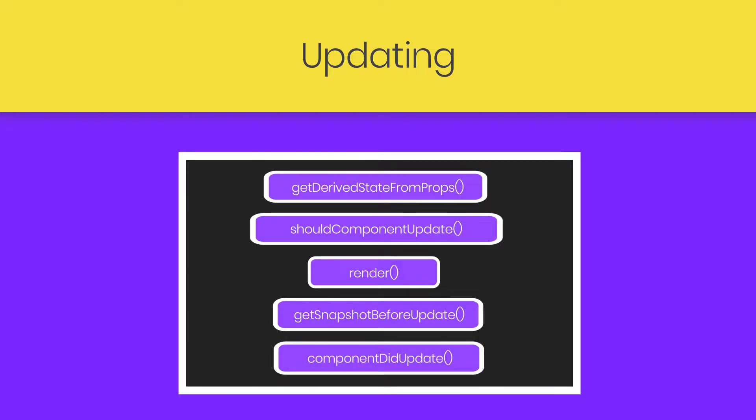This method is very interesting because in the getSnapshotBeforeUpdate method, you have access to the properties and state before the update. Meaning that even after the update, you can check what the values were before the update.